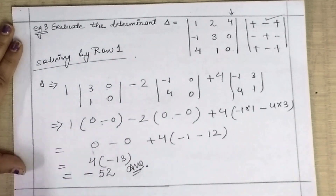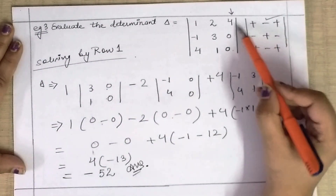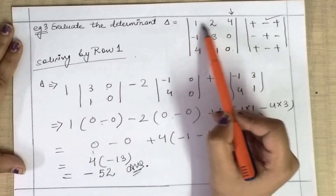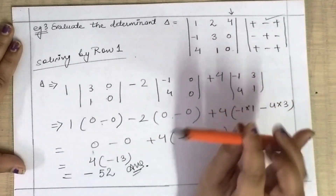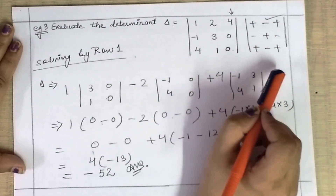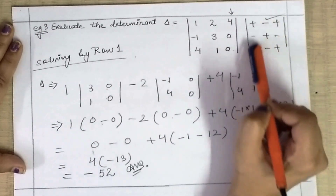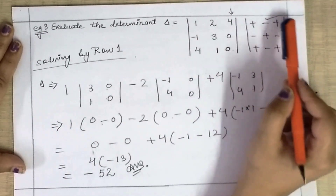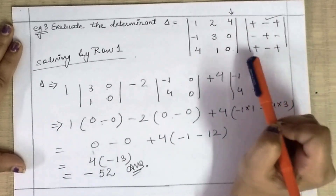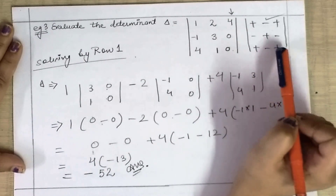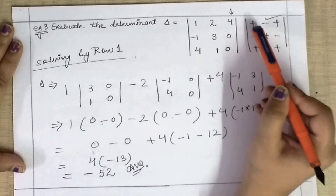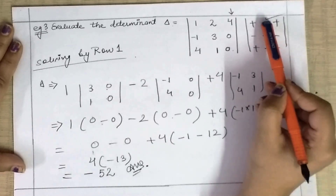Whichever way it is solved, any column or any row gives the same answer, as long as you know the sign chart. The sign chart is very easy. For row 1: plus, minus, plus. For the last row it is also plus, minus, plus. The middle row has the opposite sign: minus, plus, minus.